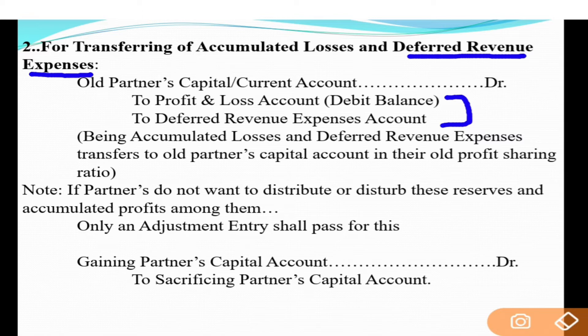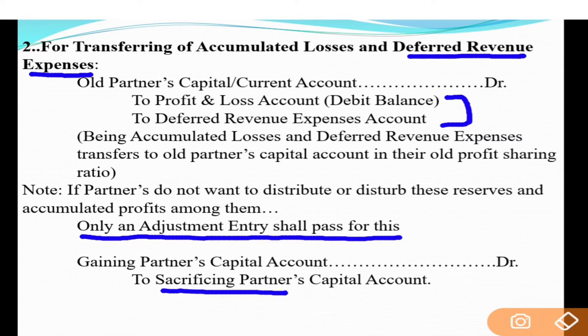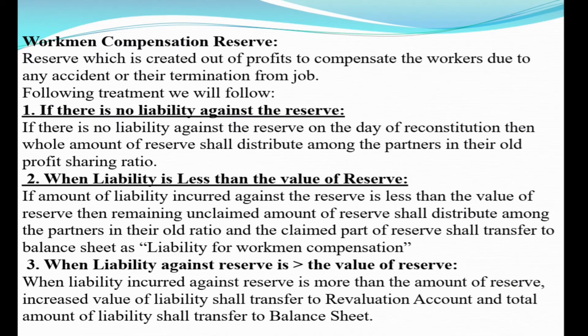Note: If partners do not want to distribute or disturb these reserves and accumulated profits - agar partners naye partner di entry te agree kar lete hain ke firm vich jo bhi reserves show ho rahe hain unnu distribute nahi karna, retain rakhna hai aur age bhi continue le jaana hai - ta us da jo net effect hoga, us di ek adjustment entry pass karenge. Adjustment entry hogi: gaining partner's capital account debit to sacrificing partner's capital account - jo partner future mein gain karega us to gain da part mangwa ke, jo partner future vich sacrifice karega us nu sacrifice part aj provide karenge.